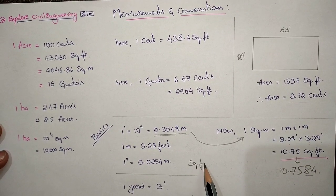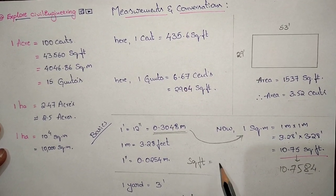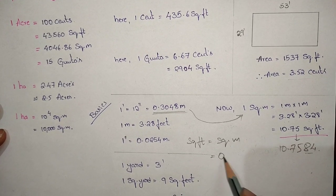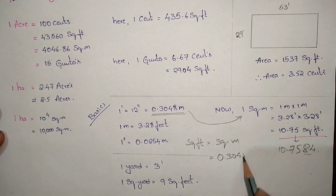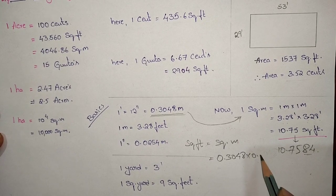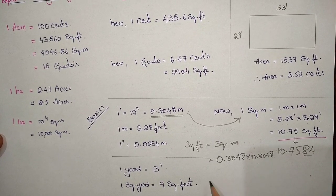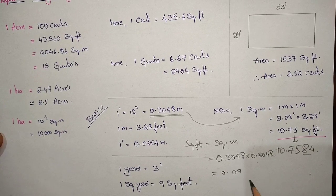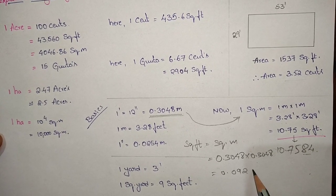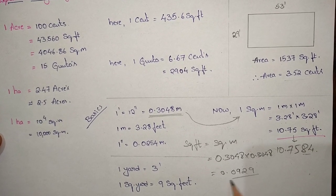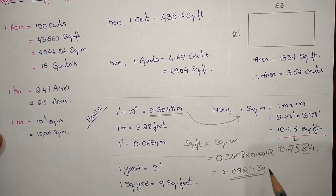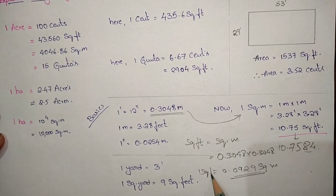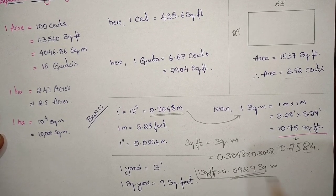We know one meter equals 3.28 feet. Now for square feet to square meters conversion: one square foot equals 0.3048 meters by 0.3048 meters, which gives 0.0929 square meters. Therefore, one square foot equals 0.0929 square meters.